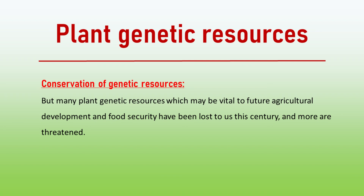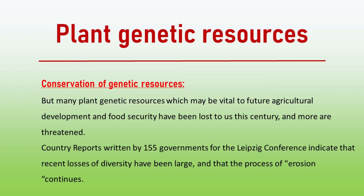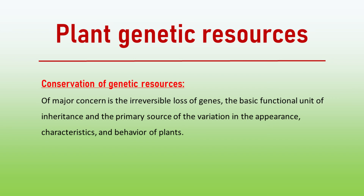But many plant genetic resources which may be vital to future agricultural development and food security have been lost to us this century, and more are threatened. Country reports written by 155 governments for the Leipzig Conference indicate that recent losses of diversity have been large, and that the process of erosion continues. Of major concern is the irreversible loss of genes, the basic functional unit of inheritance and the primary source of the variation in the appearance, characteristics, and behavior of plants.